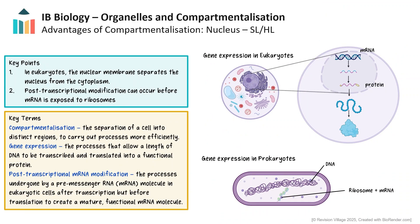In eukaryotes the nucleus is separated from the cytoplasm by a membrane, unlike in prokaryotes where the nuclear material is found in the cytoplasm. In eukaryotes, compartmentalisation allows transcription and translation to occur in different locations. Because messenger RNA remains inside the nucleus after transcription, eukaryotic cells can modify it before it reaches the ribosomes — splicing out introns, adding methyl groups and preparing a mature transcript. The nuclear pores then control the export of this mRNA to the cytoplasm for translation. This allows eukaryotes to fine-tune gene expression and timing, something not possible in prokaryotes where transcription and translation occur simultaneously.